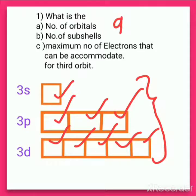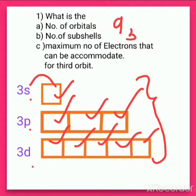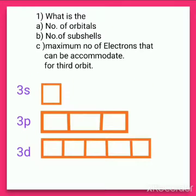So the answer to this part of the question is nine orbitals. The subshells, as we have counted, are three subshells: s, p, and d. In the case of the s subshell, there is only one orbital — the 3s orbital. In the case of the 3p subshell, there are three orbitals: px, py, and pz. Thus we have found the number of subshells and number of orbitals.